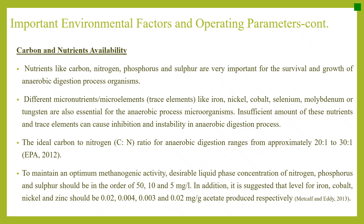Carbon and nutrients availability. Nutrients like carbon, nitrogen, phosphorus, and sulfur are very important for the survival and growth of anaerobic digestion microorganisms. Micronutrients or trace elements such as iron, nickel, cobalt, selenium, molybdenum, and tungsten are also essential. Insufficient nutrients and trace elements can cause inhibition and instability. The ideal carbon-to-nitrogen (C:N) ratio ranges from approximately 20:1 to 30:1. To maintain optimum methanogenic activity, desirable liquid-phase concentrations of nitrogen, phosphorus, and sulfur should be in the order of 50, 10, and 5 mg/L respectively. Suggested levels for iron, cobalt, nickel, and zinc are 0.02, 0.004, 0.003, and 0.02 mg per gram of acetate produced.